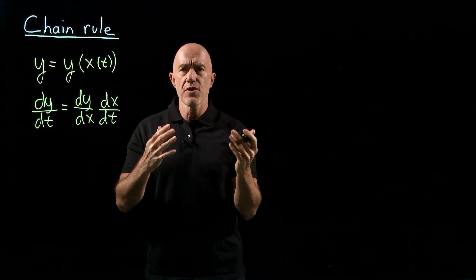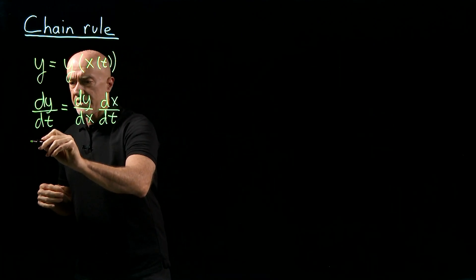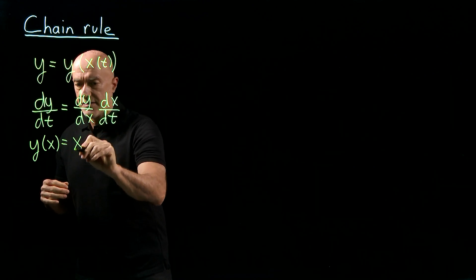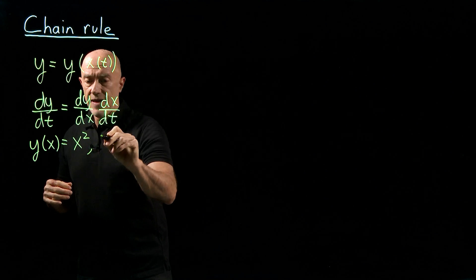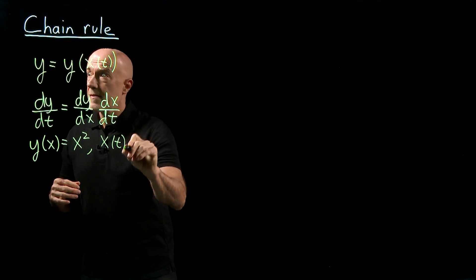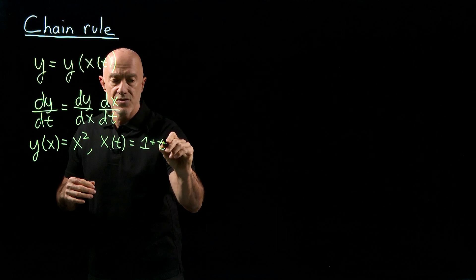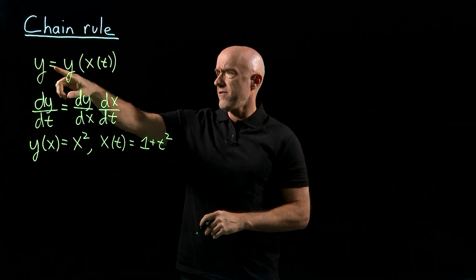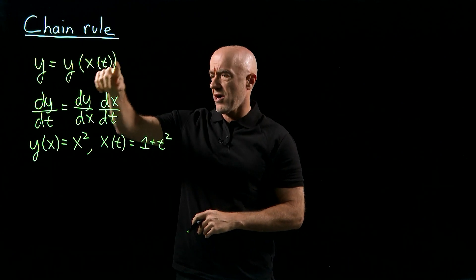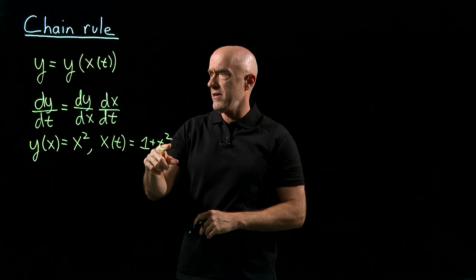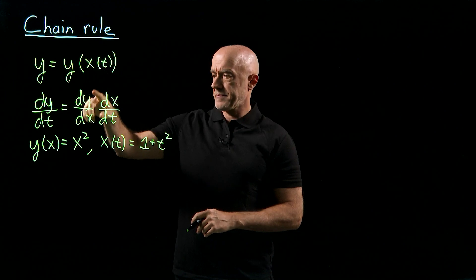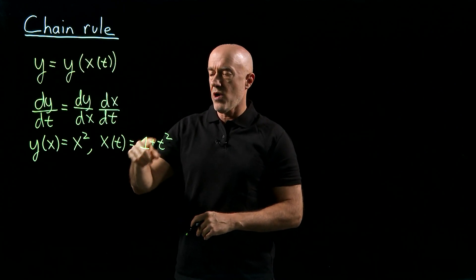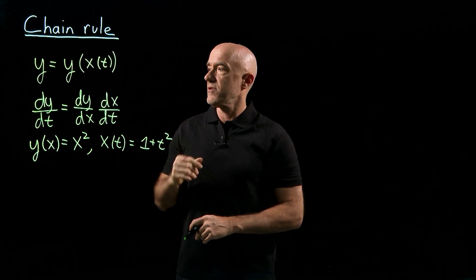Let me show you how that works with an example. If we have y of x equals x squared, and we have x of t equals 1 plus t squared, then what would y of t look like? y gets the argument 1 plus t squared, and then y says we're supposed to square it. So y of t would be 1 plus t squared, all squared.